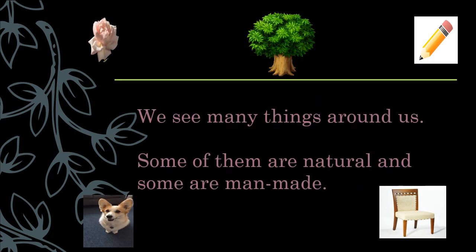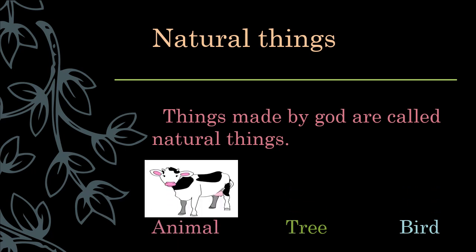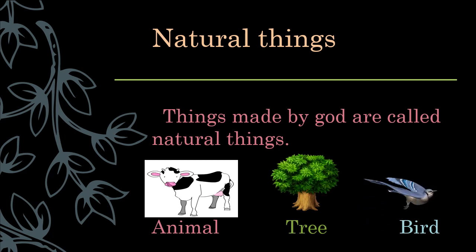We see many things around us like flower, tree, pencil, dog, chair, etc. Some of them are natural and some are man-made. Let's discuss natural things. Things made by God are called natural things. Look at these pictures that you see in nature. These are called natural things.